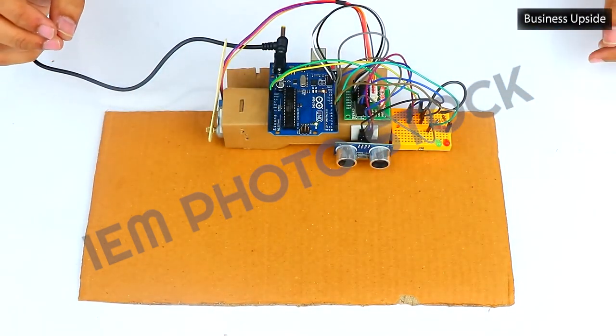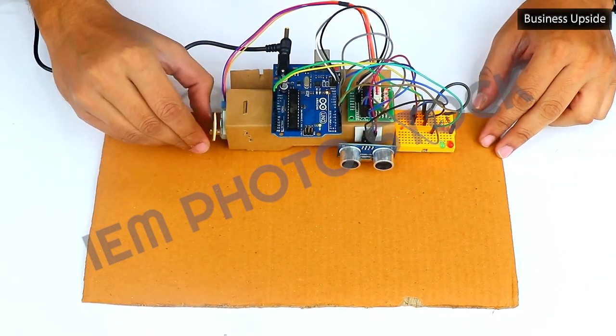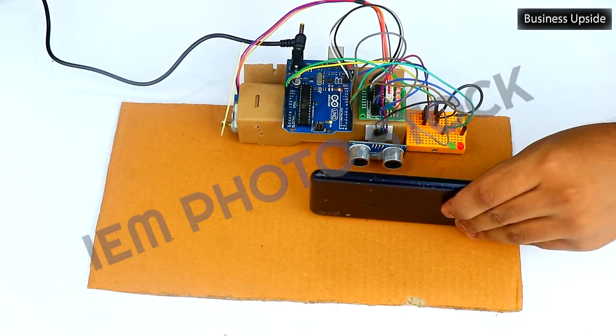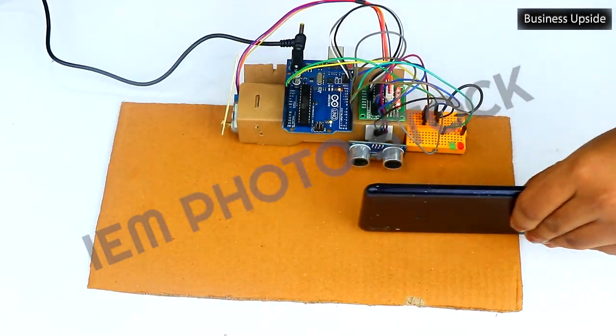Now, power up the system. If your device is wired up correctly, the smart barrier will open automatically when an object approaches it. Have fun experimenting with it.